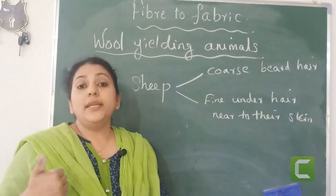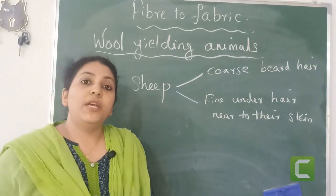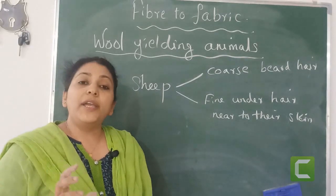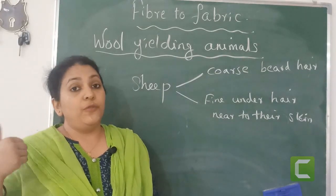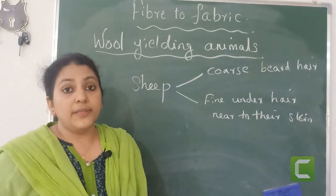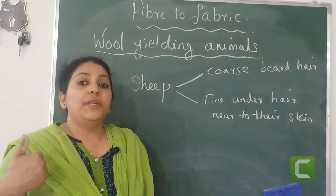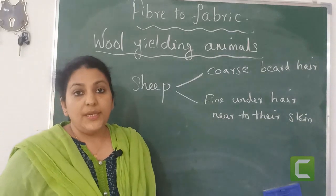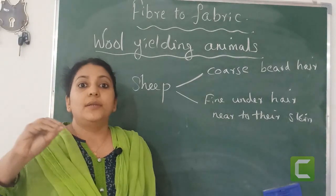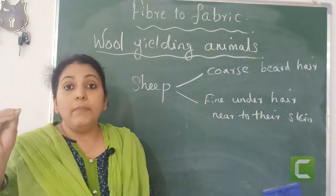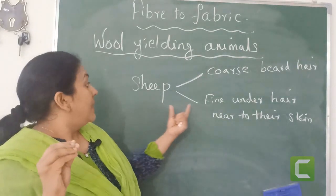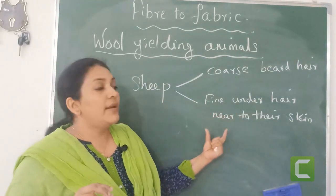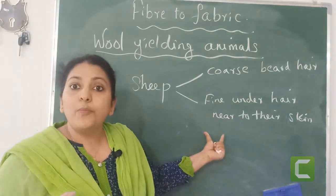For making a fabric, which one do you prefer? Definitely a smooth one. Do you like a blanket which is made with very coarse hair? Never. So we prefer — the people who make wool prefer fine under hair near to their skin. So they need some breeds of sheep which have, throughout their full body, fine hair. If the full body has fine hair, it is very profitable for them. Making the sheep have fine under hair near to the skin is also possible.